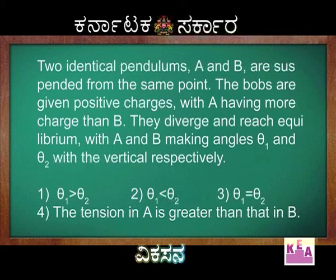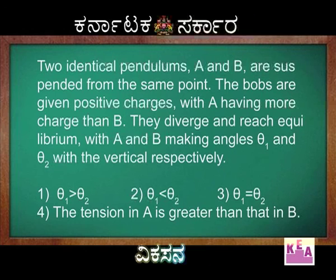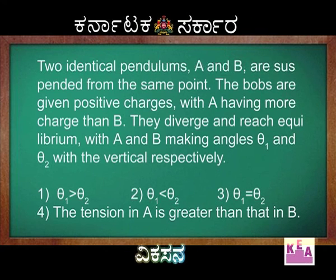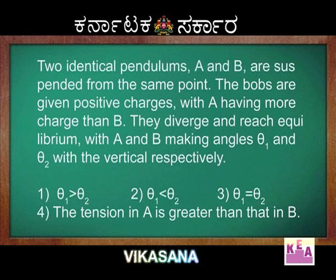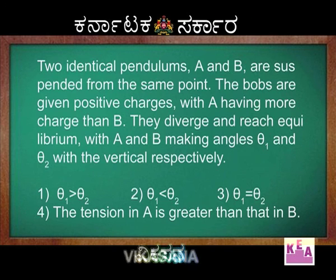Now I will move on to the next question. Two identical pendulums A and B are suspended from the same point. The bobs are given positive charges with A having more charge than B. They diverge and reach equilibrium with A and B making angles θ1 and θ2 with the vertical respectively. The options are: 1) θ1 > θ2, 2) θ1 < θ2, 3) θ1 = θ2, 4) the tension in A is greater than the tension in B.